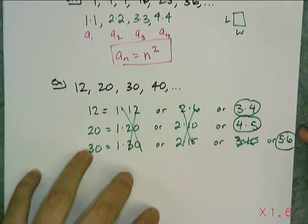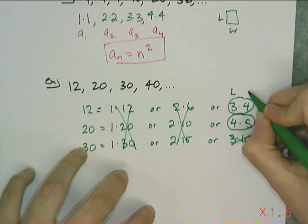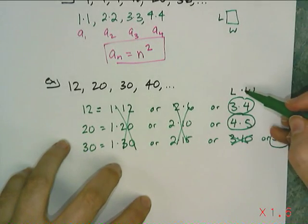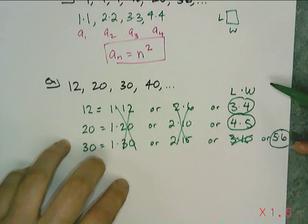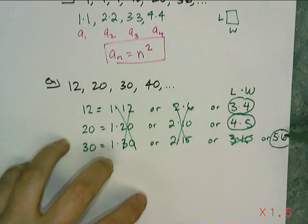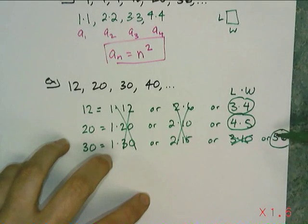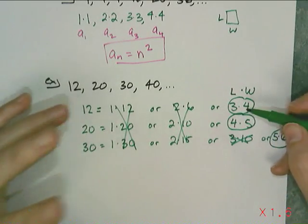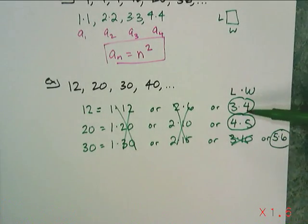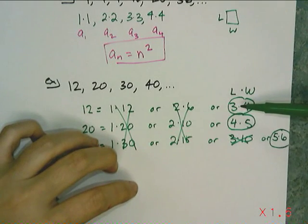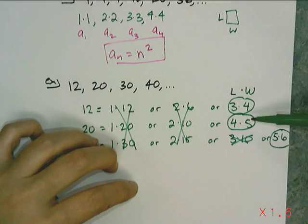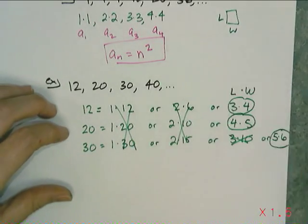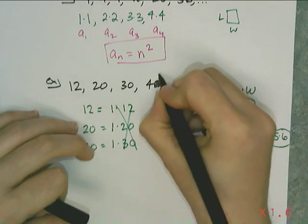Now I want you to see the pattern. We can think of 3, 4, 5 as the lengths, and 4, 5, 6 as the widths. Those are arithmetic sequences. If this pattern holds, this next number should be a 6 for the length and a 7 for the width. And 6 times 7 is 42 — yes! So I need to correct: that fourth term should be 42, not 40.